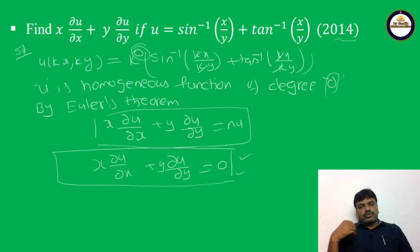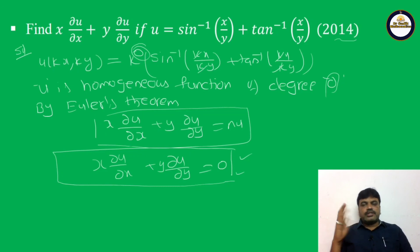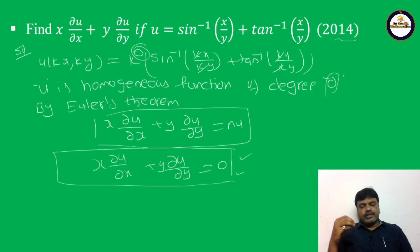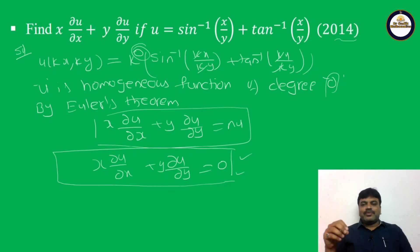We learned new things: homogeneous functions, and based on homogeneous functions we have Euler's theorem: x·∂u/∂x + y·∂u/∂y = n·u when u is a homogeneous function of degree n. We solved two problems of two different models. Practice well, and if you have any doubt please comment in the comment box. Hope you understand. Thank you for watching this video.